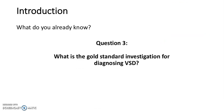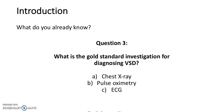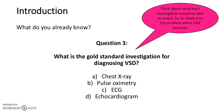Question 3. What is the gold standard investigation for diagnosing a VSD? Is it A. Chest x-ray. B. Pulse oximetry. C. ECG. Or D. Echocardiogram. Think about each investigation and what it would show, and try to relate that to what a VSD would present with. The answer is D, echocardiogram.